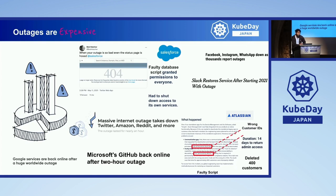Why wait for an outage to happen? Why wait for something like this to come out as news, or for downtimes to cause losses? A lot of companies are actually not moving to chaos testing because they are skeptical — skeptical about how to run such production failures. Maybe they don't have the budget. These are the things we are facing day in and day out as part of the community.